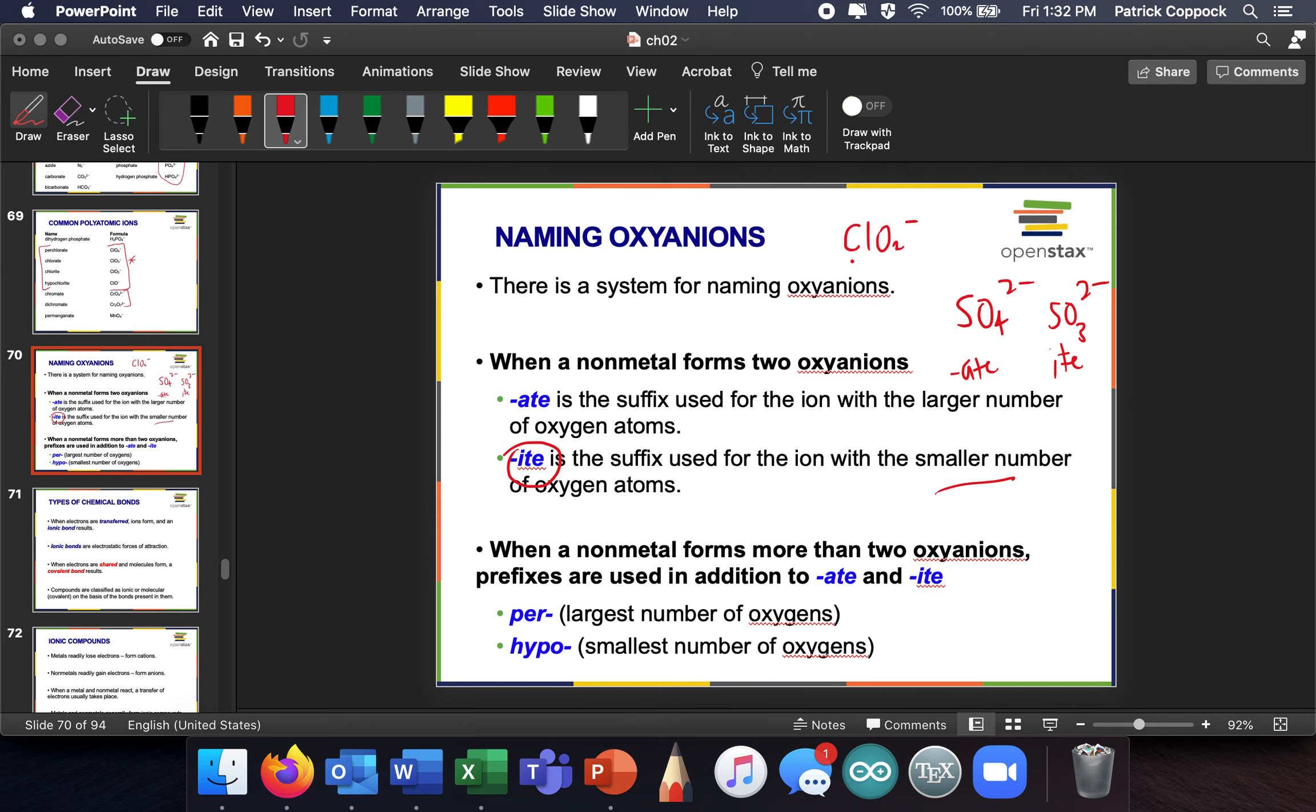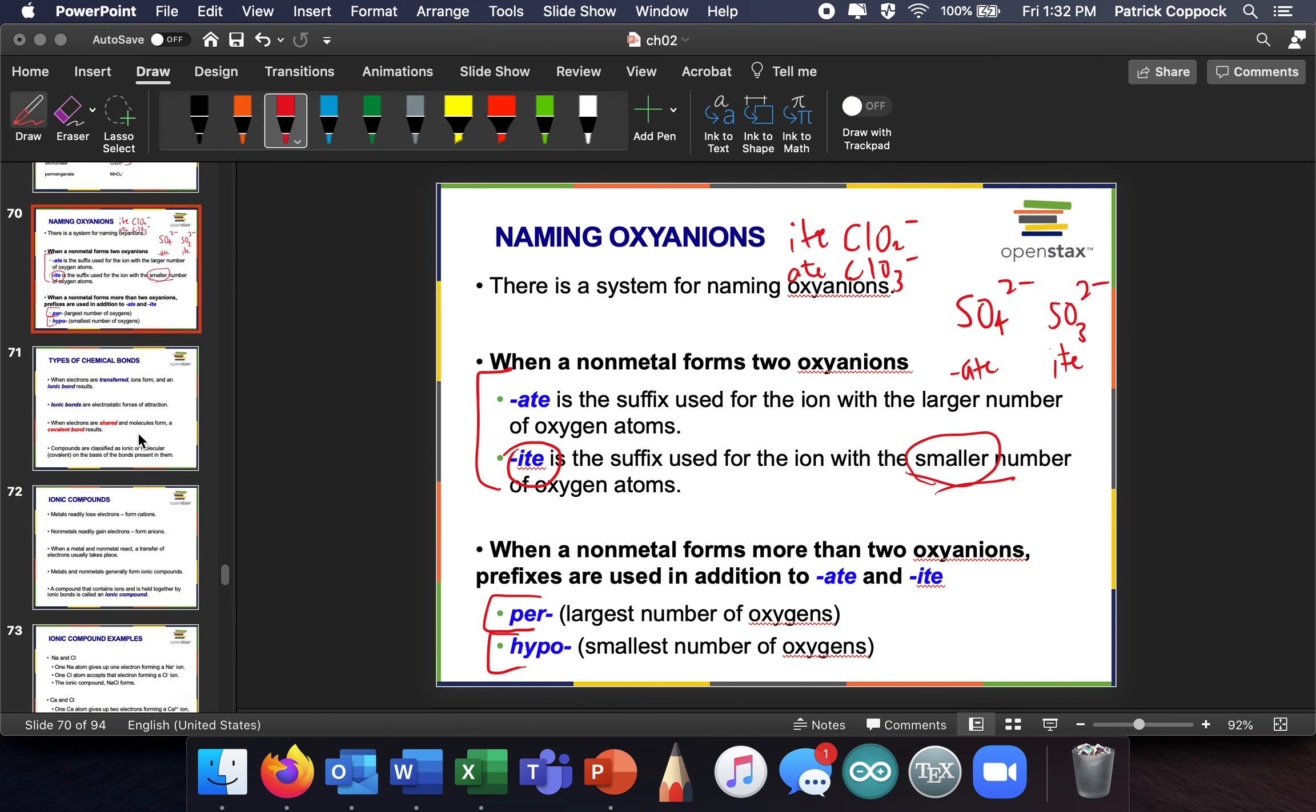Chlorite and chlorate. This has got fewer. That's got two. This has three. So, this is going to be ate. And this is going to be ite. I'm sorry, my handwriting there. Let me get rid of that and do that again. Ite and ate, because it has fewer. That's what this rule is. Ate is the suffix when you have an oxoanion with a larger number of oxygen atoms in it, ite is when you've got a smaller number of oxygen atoms in it. Per means we have even more. That's the largest number. And hypo is when we've got the smallest number. And these will make more sense when you take some practice, take some time to practice those.